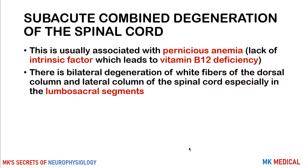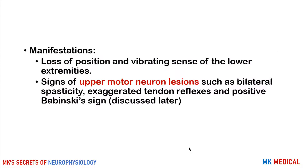With subacute combined degeneration of the spinal cord, this is associated with pernicious anemia — a lack of intrinsic factor leading to vitamin B12 deficiency. There will be bilateral degeneration of the white fibers of the dorsal column as well as the lateral column of the spinal cord, especially in the lumbar and sacral segments. This leads to loss of positioning and vibration sensation in the lower extremities. Signs of upper motor neuron lesions will also be present, such as bilateral spasticity, exaggerated tendon reflexes, and a positive Babinski sign.